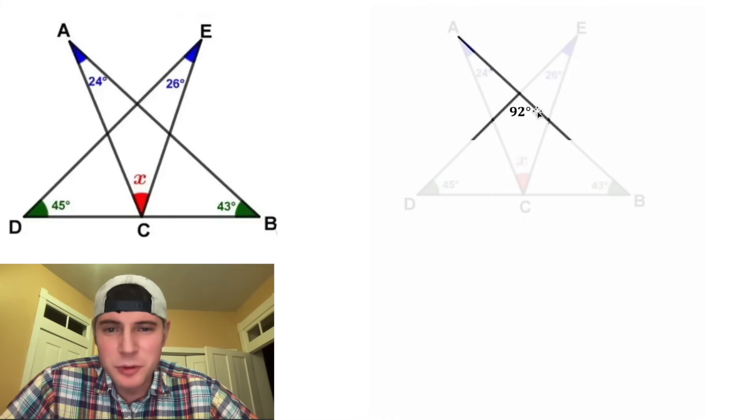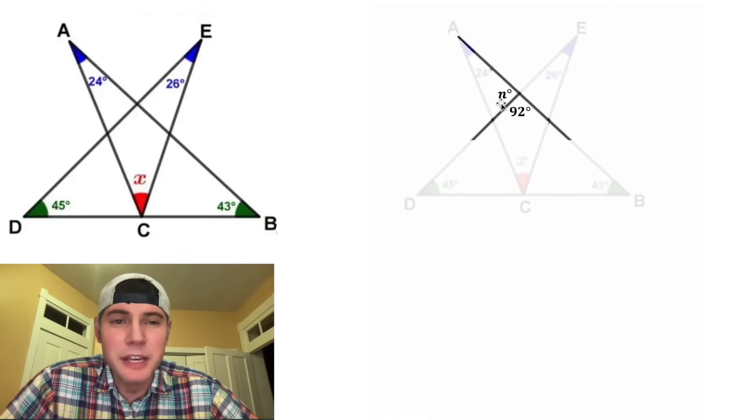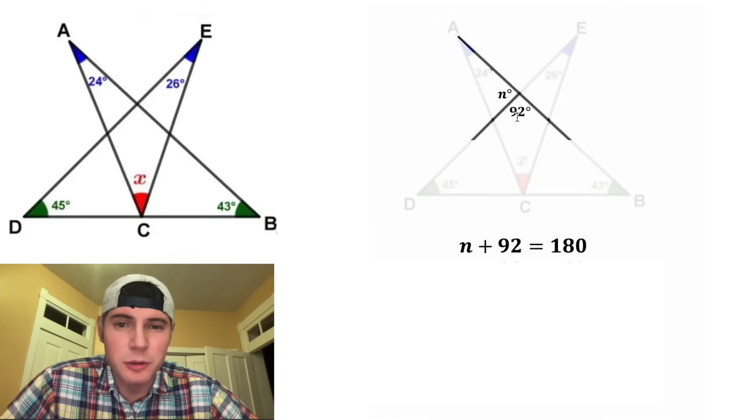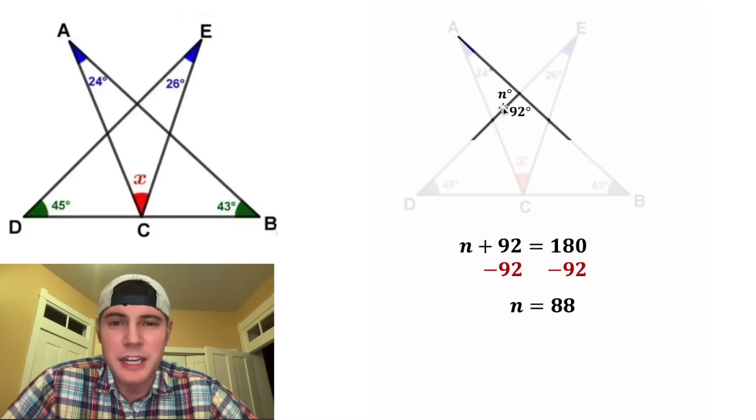And then next, let's focus on this relationship right here. This is called a linear pair. If we let this angle be N degrees, then we know that N plus 92 is equal to 180 degrees. And after we subtract 92 from both sides, we get N is equal to 88. So we can update this there.